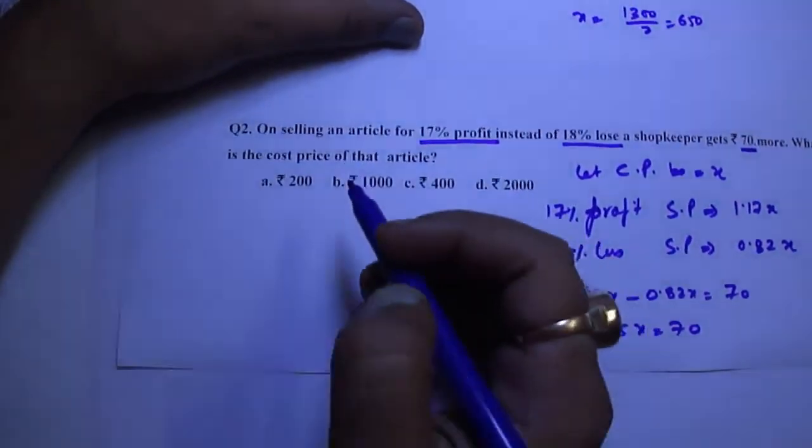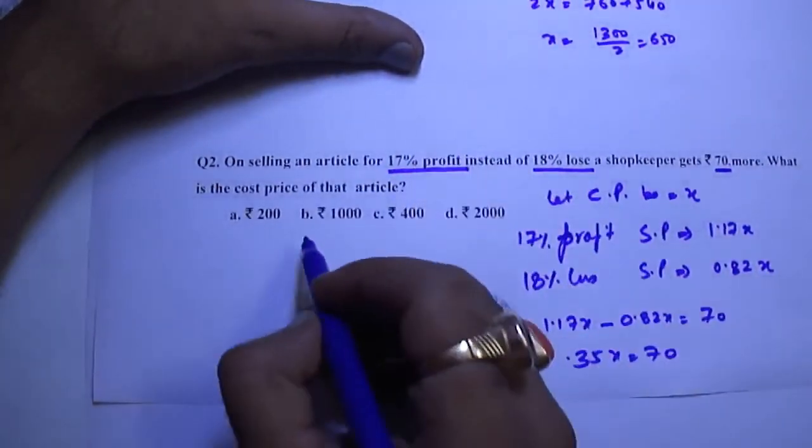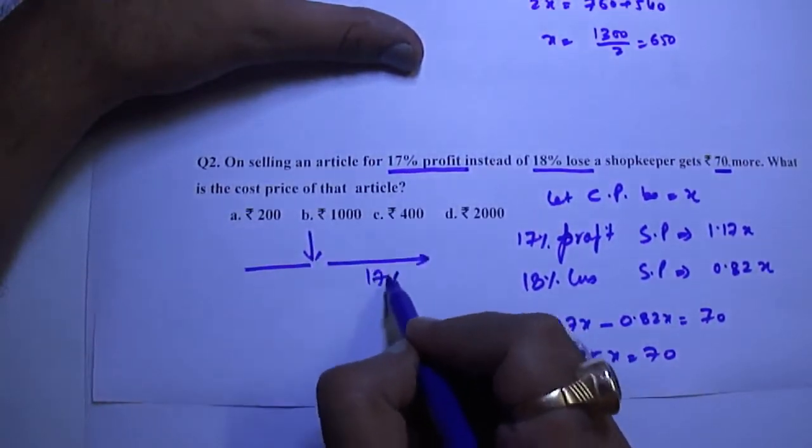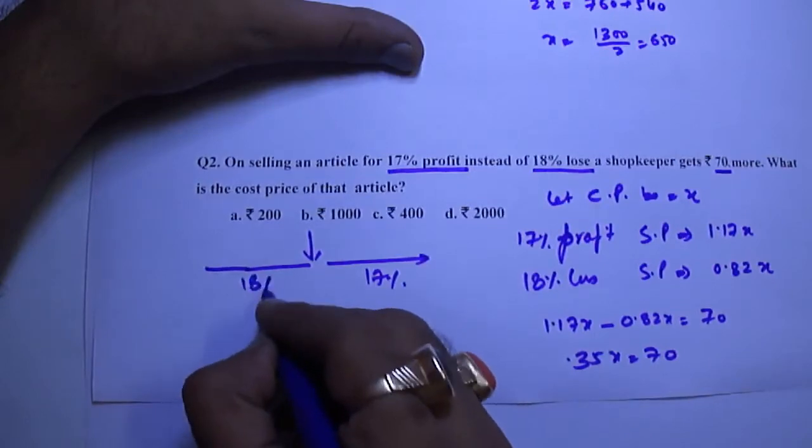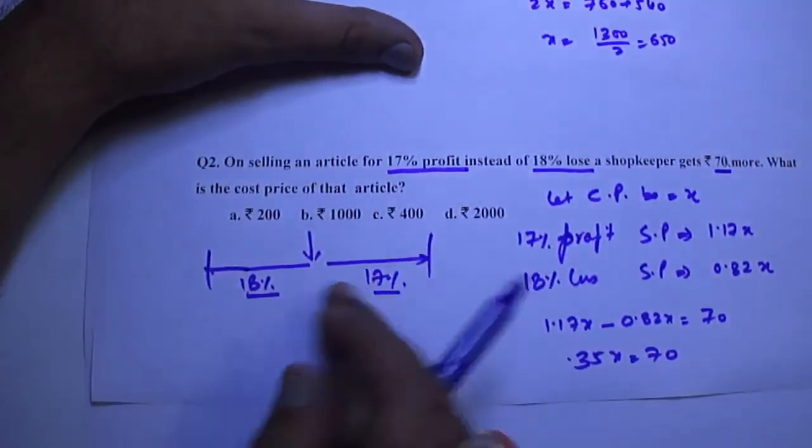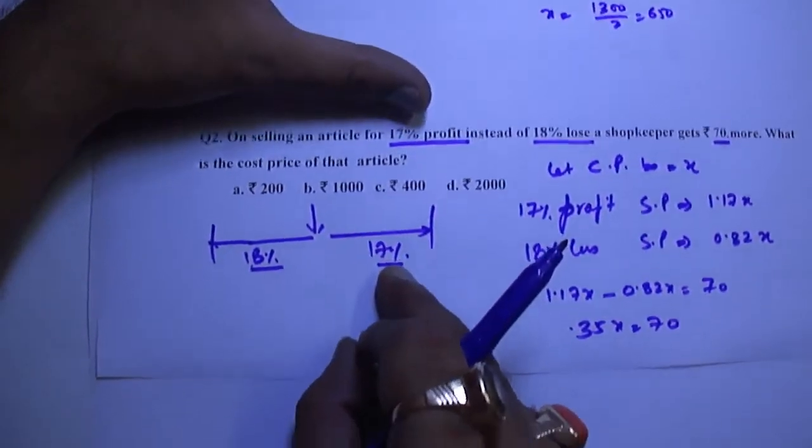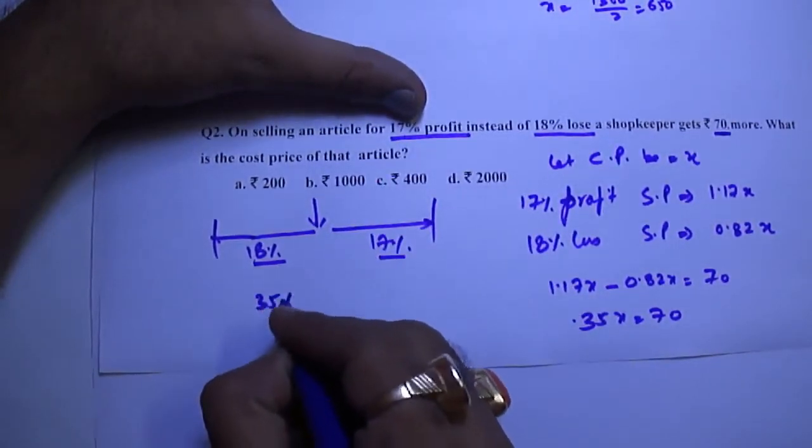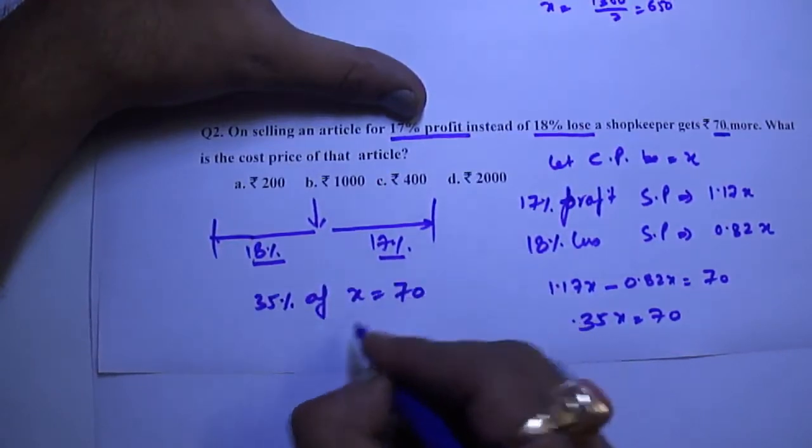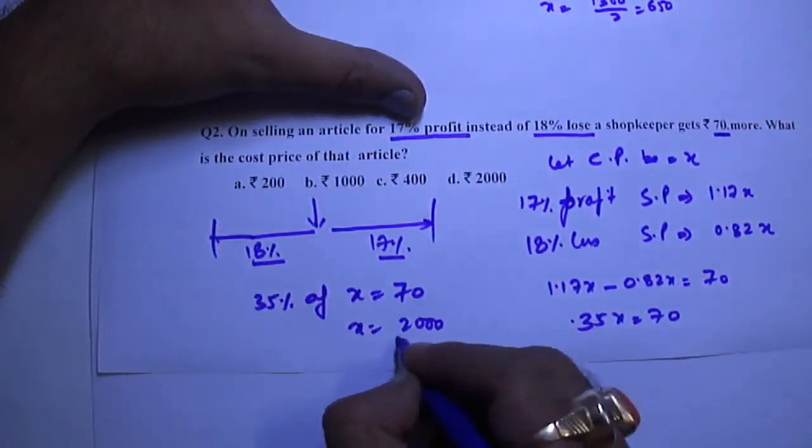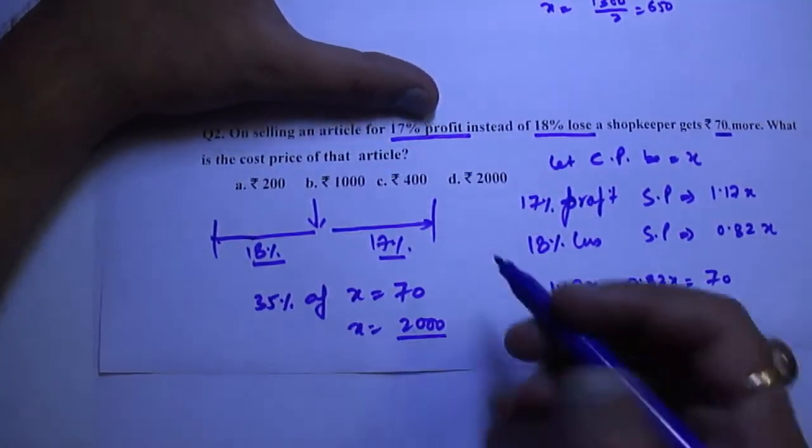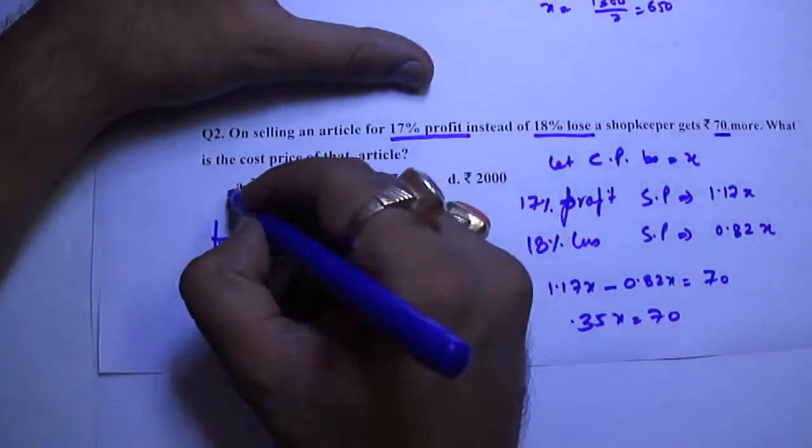But the important part: it is given that 17% profit and this is 18% loss. The difference between these two is 18 plus 17 because this is loss and this is profit. We will directly do it like this: 35% of CP that is X equals 70. So X is 2000. The answer is 2200, option A.